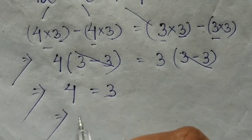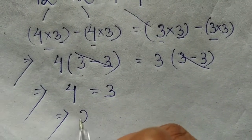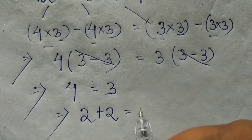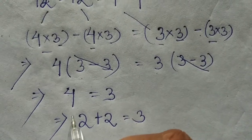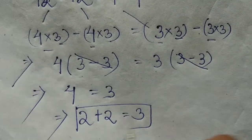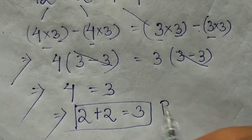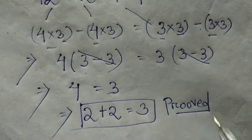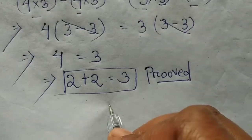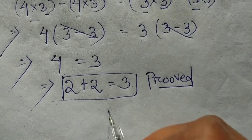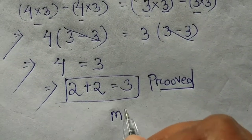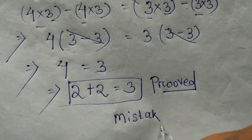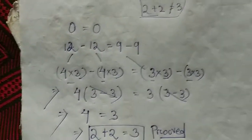That implies 4 is equal to 2 plus 2, which equals 3. Prove that 2 plus 2 is equal to 3. Your task is to find the mistake — this math has a mistake.